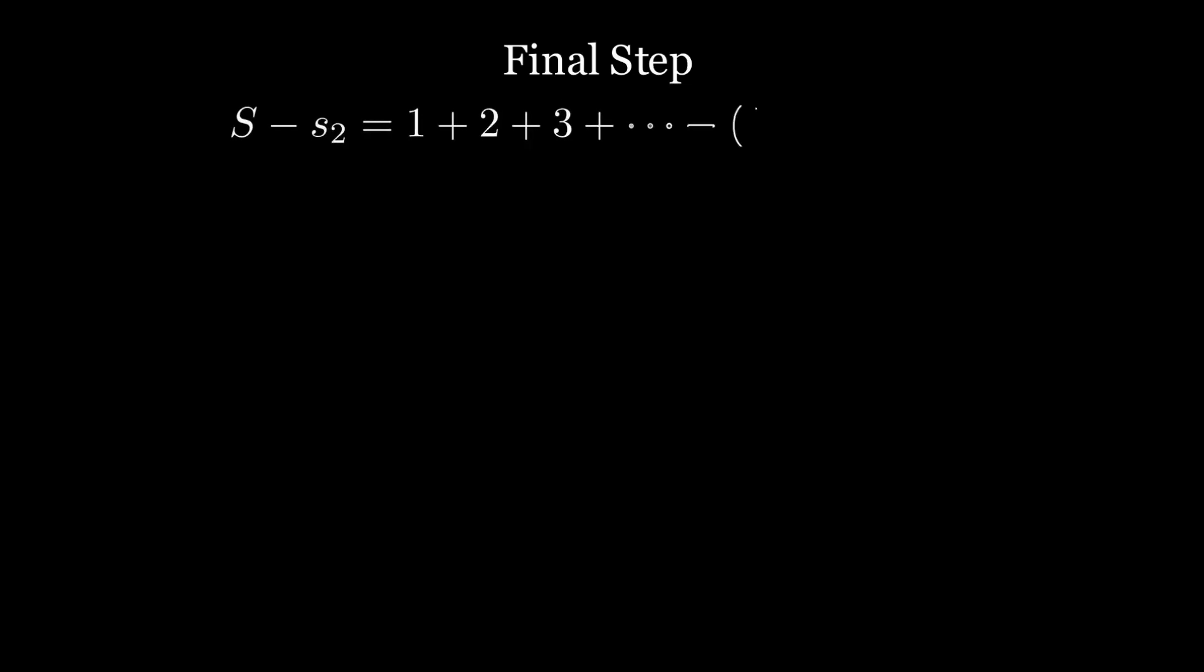he just took the original series and subtracted the alternating series and summed it like this. He got s minus quarter equals to four s. And that's how he got the value negative one over twelve.